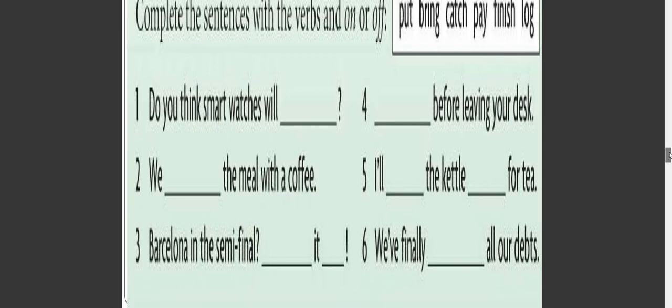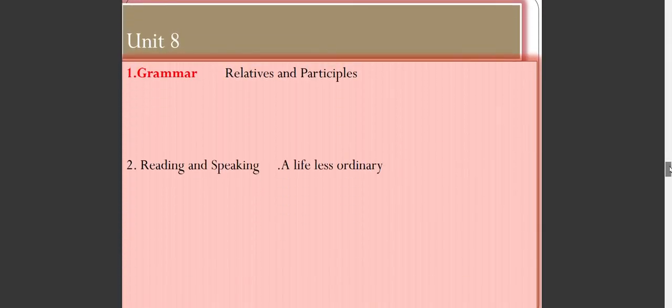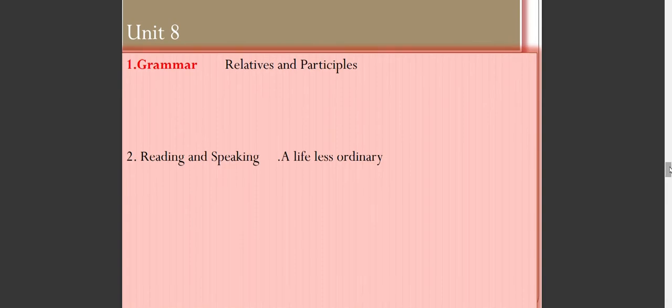Now let's come to Unit 8. We have two main topics: grammar and reading and speaking. In grammar we have relatives and participles. In reading and speaking we have 'A Life Less Ordinary.'